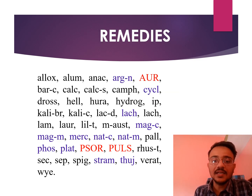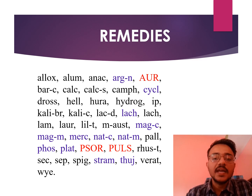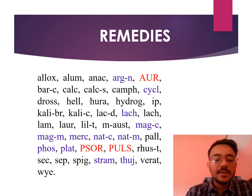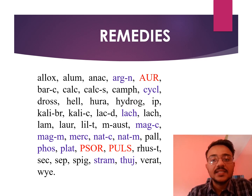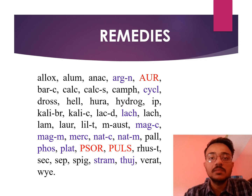The remedies which can be seen in this rubric — all of these remedies can be there. But the three marked remedies are Aurum Metallicum, Sorinum, and Pulsatilla. The two marked remedies in this rubric are Argentum Nitricum, Cyclamen, Lachesis, Natrum Carb, Mag Carb, Magmur, Mercurius, Natrum Mur, Phosphorus, Platina, Stramonium, and Thuja. These remedies can be prescribed on the basis of other general symptoms as well as the mental symptoms of the patient.